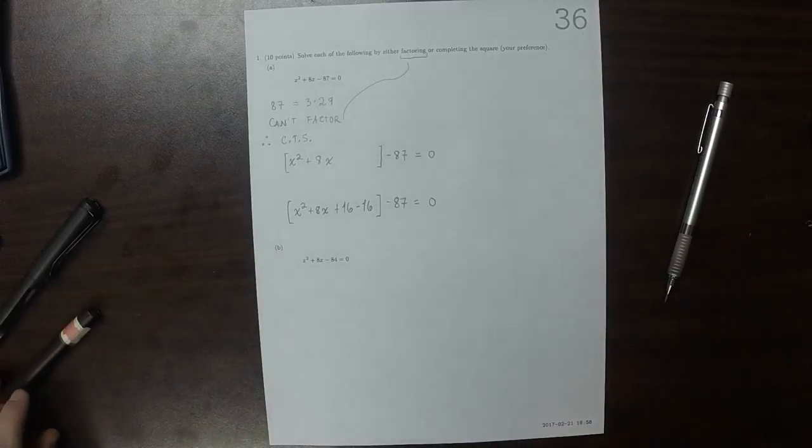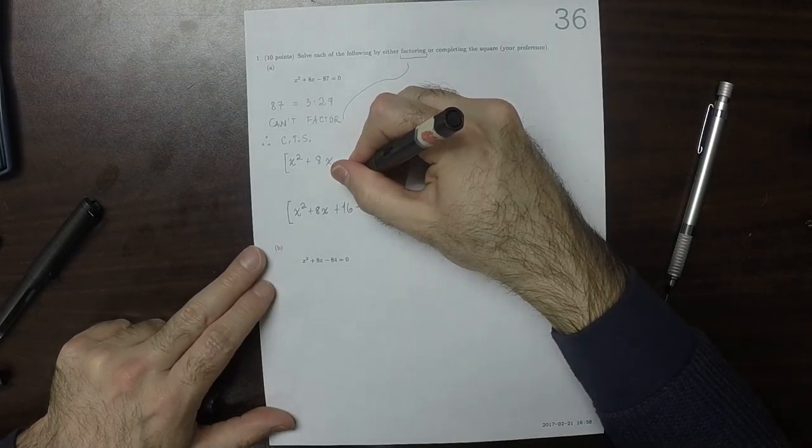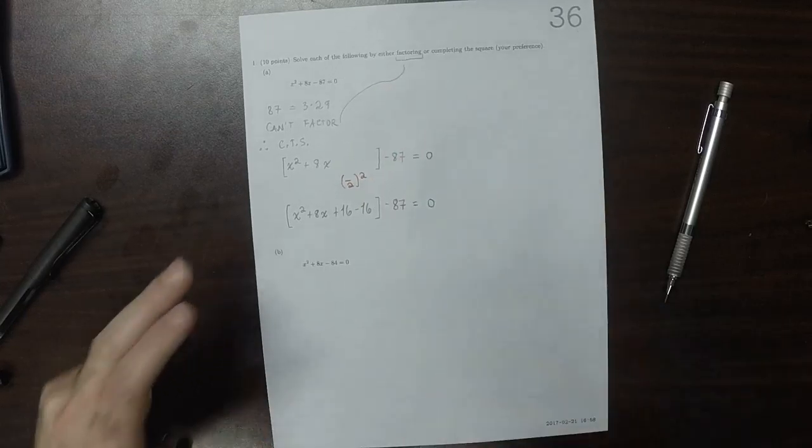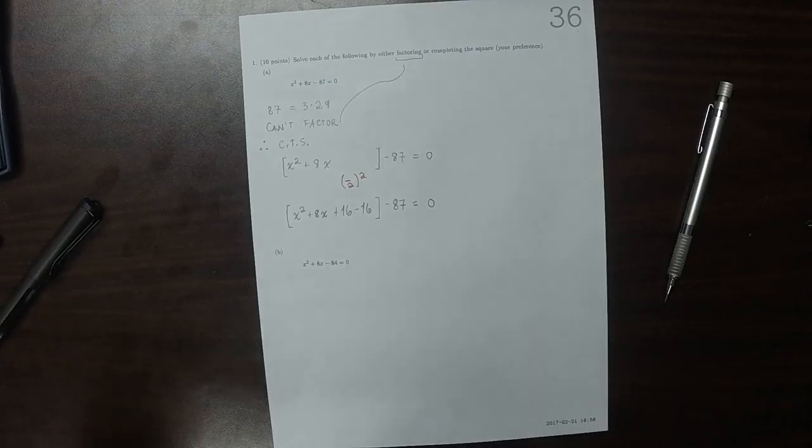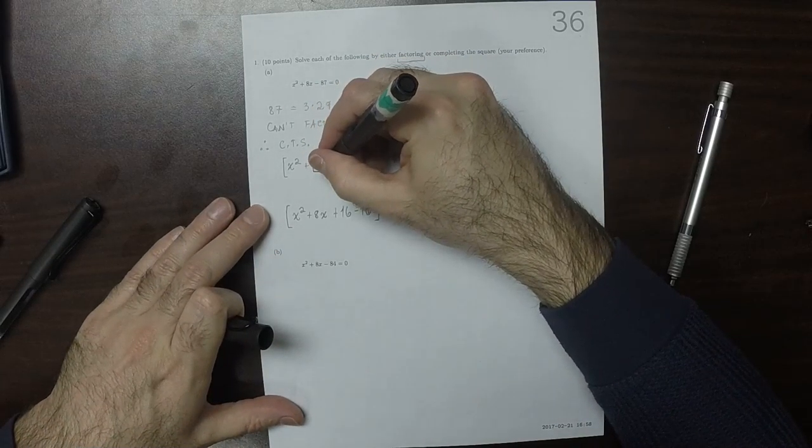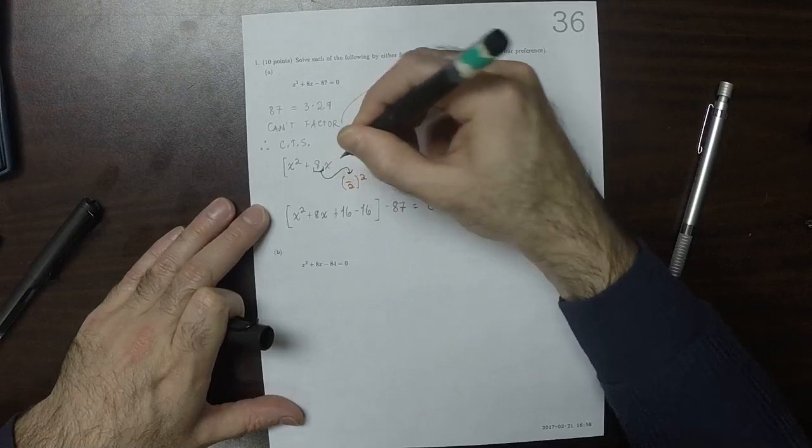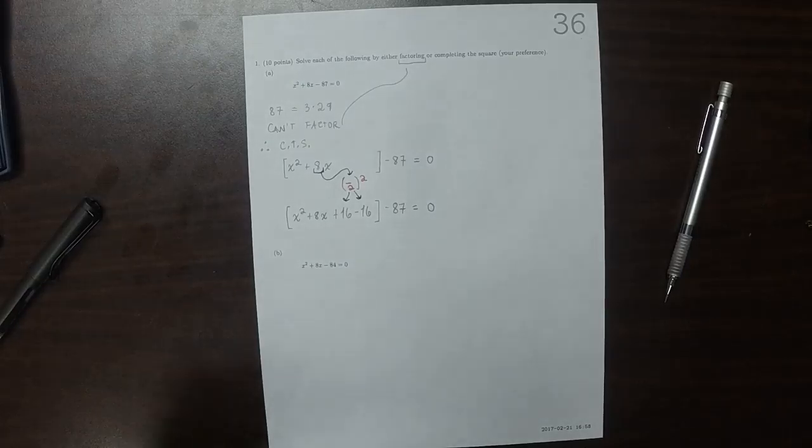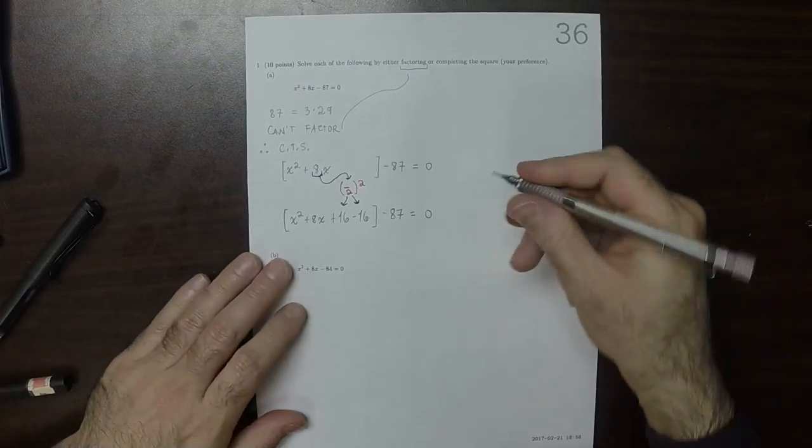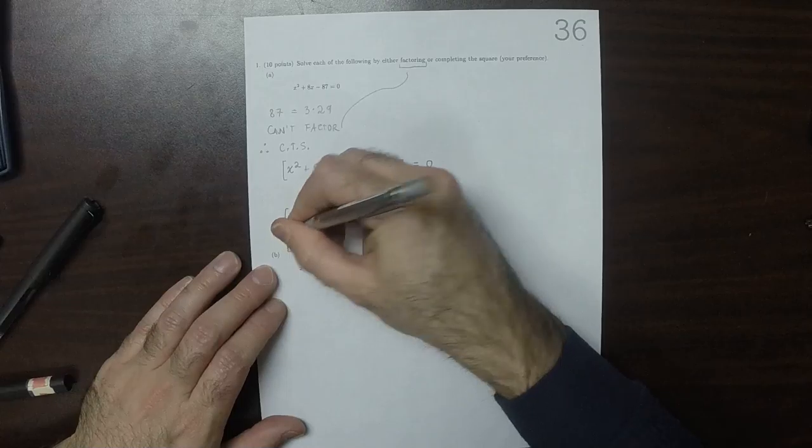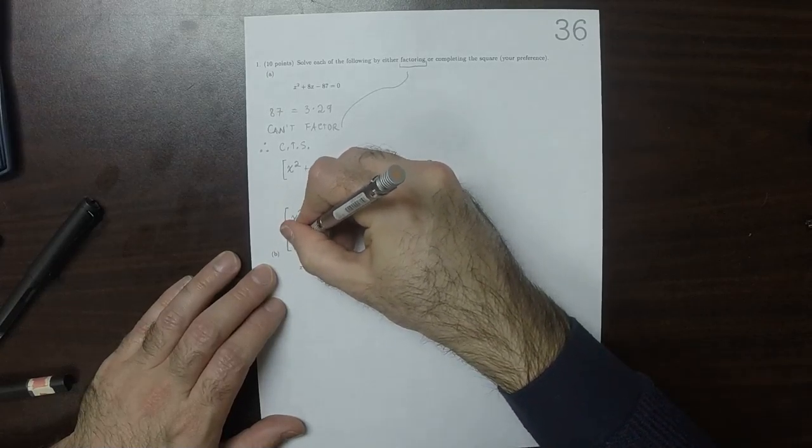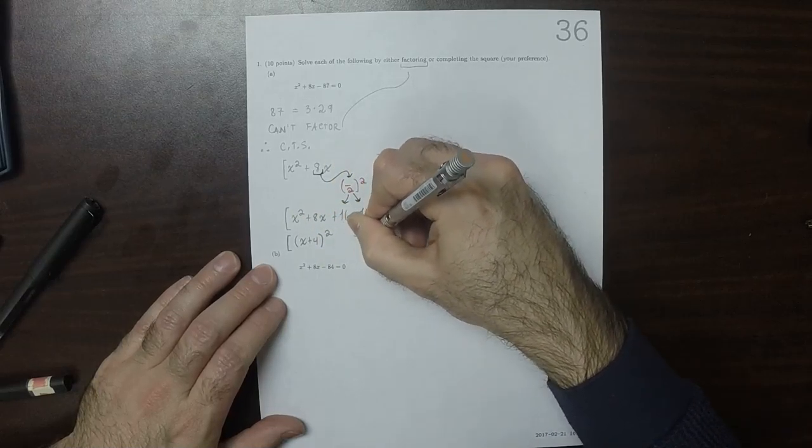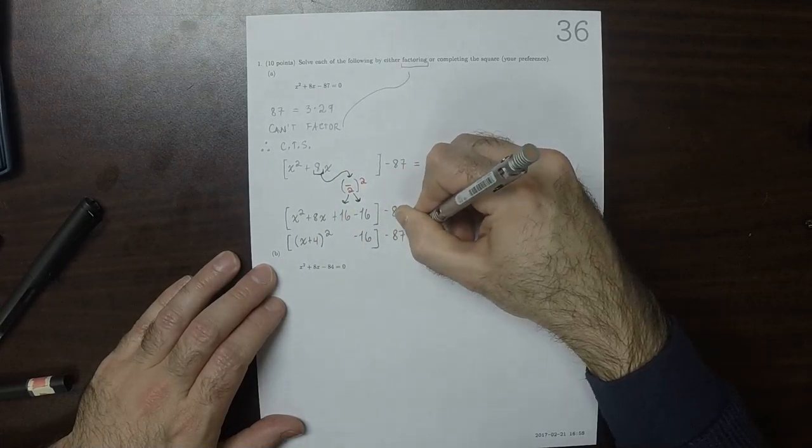And just to remind you, that 16 is something over 2 squared. So it's always like that. And then what goes in there is this coefficient. So then, these first three terms factor. So that would be x plus 4 squared, and then minus 16, and then minus 87.